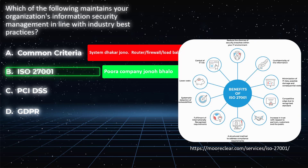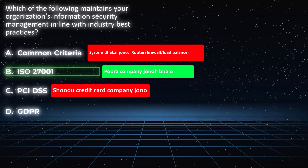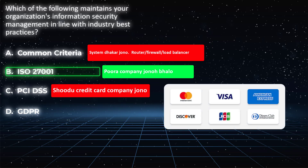The correct answer is Choice B. Now for Choice C, PCI DSS — this is related to credit card companies. In the exam, the question is about general company security, not specifically credit card or system evaluation. Choice A and Choice C are not the answer here. Choice B is the actual correct answer. Choice C, PCI DSS, is for Visa, MasterCard, American Express — credit card companies.